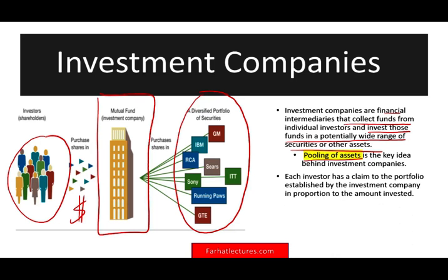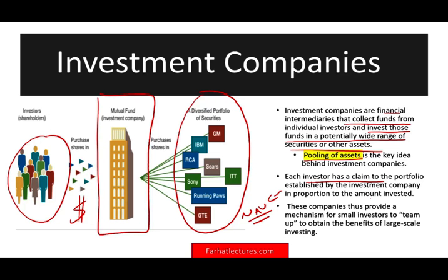Each investor has a claim to the portfolio established by the investment company in proportion to the amount invested. That proportion is measured through something called NAV, or net asset value, which we'll compute shortly. These companies provide a mechanism for small investors to team up together and obtain the benefits of large-scale investing — and that is the purpose of investment companies.